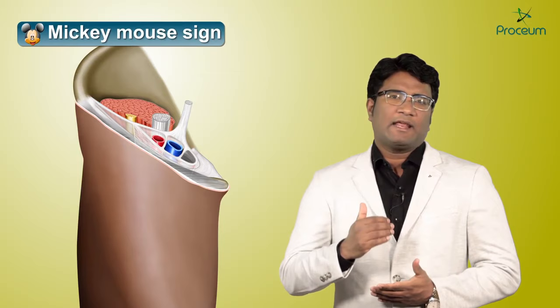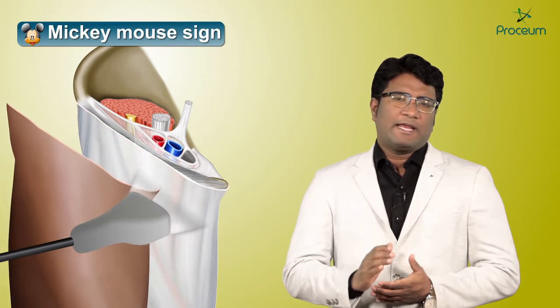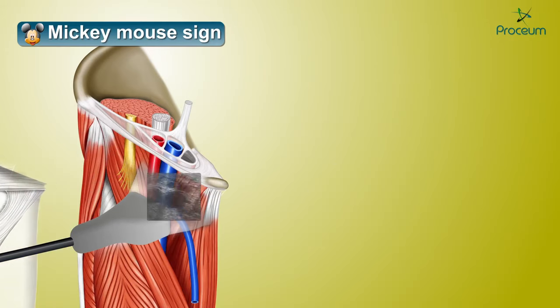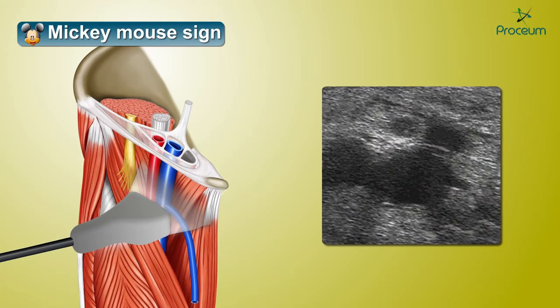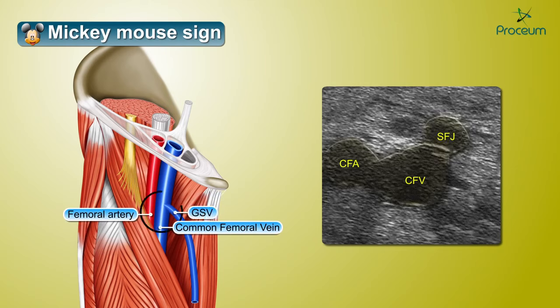The next place where we encounter the Mickey Mouse sign is at the anterior aspect of the thigh at the region of the groin. On short-axis ultrasound at the anterior aspect of the thigh at the level of the groin, the arrangement of the femoral vessels — the femoral artery, the common femoral vein, and the opening of the great saphenous vein at the saphenofemoral junction — takes the appearance of a Mickey Mouse.